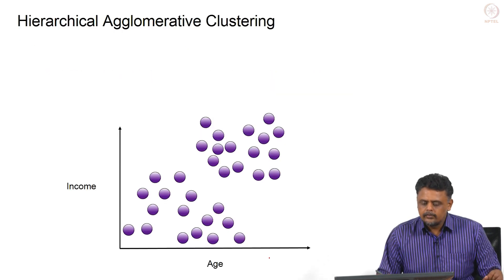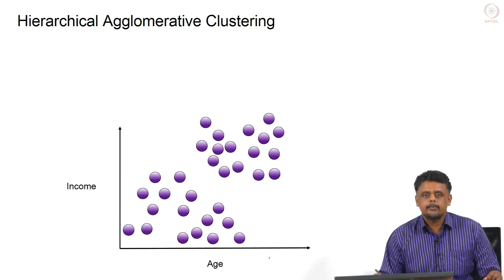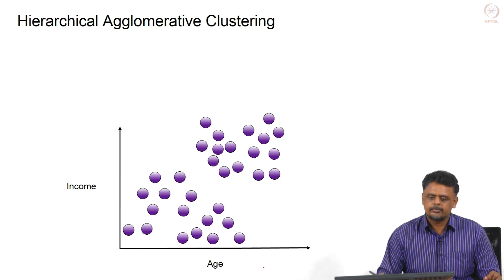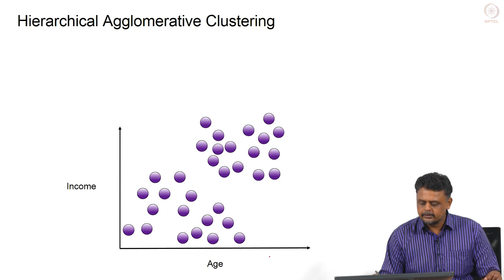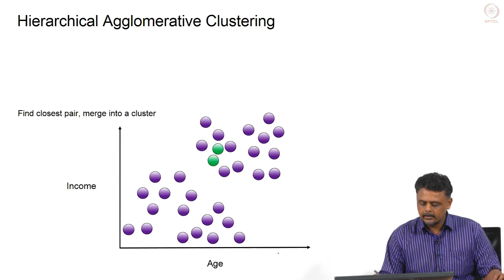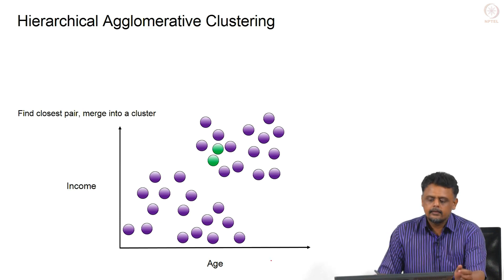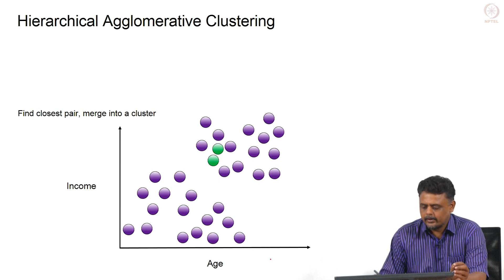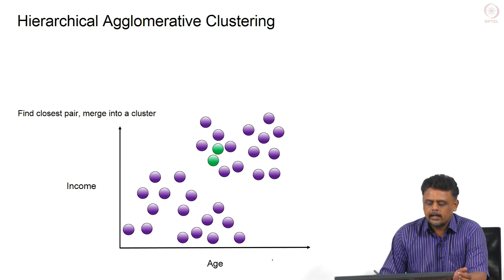As an overview of the algorithm, let us consider the same dataset as we had for the k-means algorithm, where we had the income and age statistics of users of a particular website. It is plotted in 2D so it is easy to visualize. Hierarchical agglomerative clustering starts off by finding the closest pair — we treat each data point as a cluster by itself, find the closest pair, and merge them into a cluster.